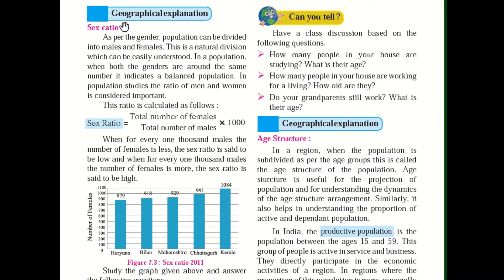On the next page we have something called sex ratio. What do you mean by sex ratio? As per gender — gender means male and female — the population can be divided into males and females. So we can count how many males and females there are; that is called gender distribution. This is a natural division easily understood. When both genders are around the same number in a population, it indicates a balanced population.